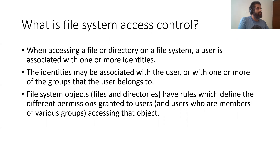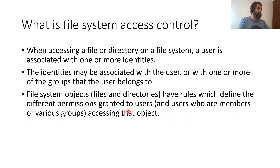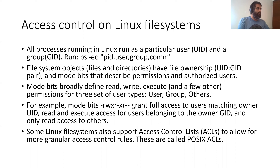What is file system access control? This is a general definition: you have a file or directory on the file system, a user trying to access it, and that user is associated with one or more identities. The identity may be directly associated with the user themselves — the user identifier — or with one or more groups that the user belongs to. File system objects have rules defining the permissions granted to various users accessing the object in a particular way.